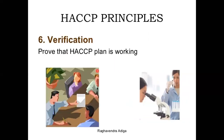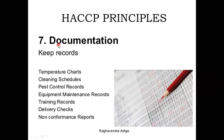The sixth principle is the verification process. By this process we have to verify whether your hazard plan is working properly or not, cross-verifying with other methods. The seventh and last principle is documentation. Whatever records you take throughout these principles and unit operations, you have to record everything — from raw material reception, initial screening of raw material, in-process screening, temperatures, charts, cleaning schedules, pest control records, equipment maintenance records, and training records. You must keep their documentation so that your HACCP will work properly.